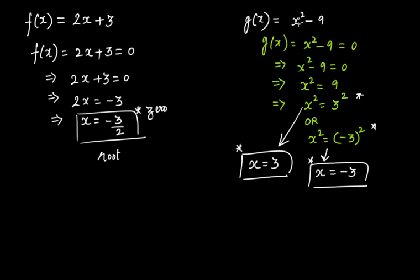If you put x = 3, then 3² - 9 = 9 - 9 = 0. If you put x = -3, then (-3)² - 9 = 9 - 9 = 0. So putting either of these two values makes the polynomial equal to zero — these are the two zeros or roots of this quadratic polynomial. In contrast, the linear polynomial has only one root or zero.